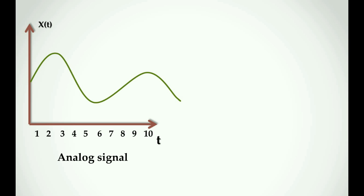So we will see discrete signals. A discrete signal means we take an analog signal and convert it to a discrete signal, which has a specific value at a specific time — for example, at the first second, second second, third second, fourth second, and so on.